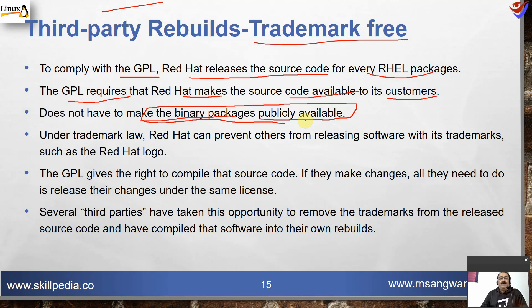With Linux, because you have to release the source code, anybody can put their own trademark, logos, branding colors, and release it. That is not prohibited, because the source code has to be released ultimately. As long as you are releasing the source code, you are complying with the GPL. Binary packages need not be released — they can be sold. You don't have to make them publicly available, but the source code must be made public.